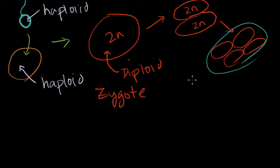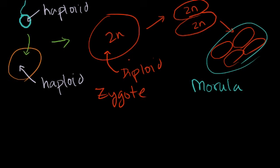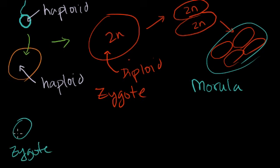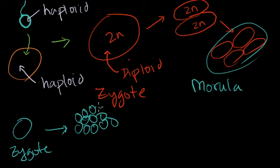This mass of cells is referred to as the morula. It actually comes from the word for mulberry, because it looks like a mulberry. So we start with a zygote — a fertilized egg — it just starts duplicating via mitosis, and you end up with a ball of cells. It's often a power of 2 because these cells, at least initially, are all duplicating at once. And then you have this morula.